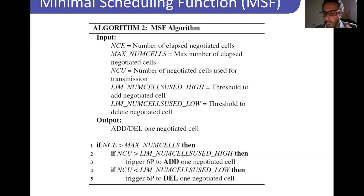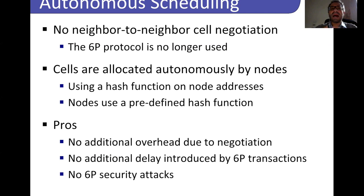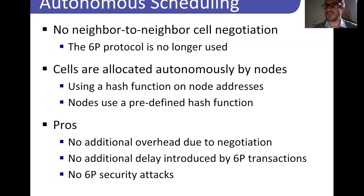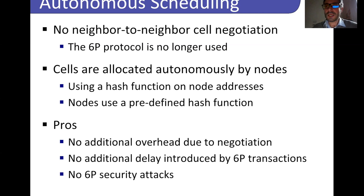A different approach is adopted by autonomous scheduling functions. With autonomous scheduling, there is no neighbor-to-neighbor cell negotiation, so the 6P protocol is not used. Cells are allocated autonomously by nodes using a shared algorithm, for instance a hash function. The advantage is no overhead due to negotiation and no delay from 6P transactions. The drawback is that these scheduling functions cannot handle varying traffic conditions, since the amount of cells scheduled by each node is typically fixed.